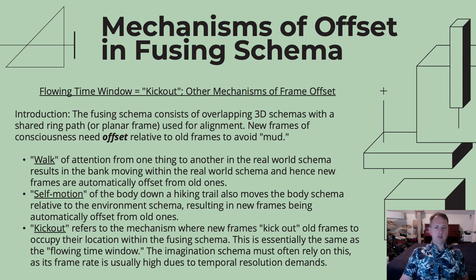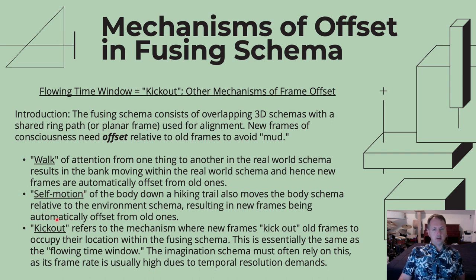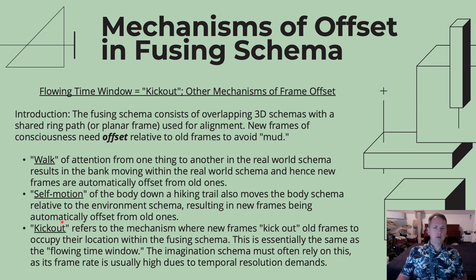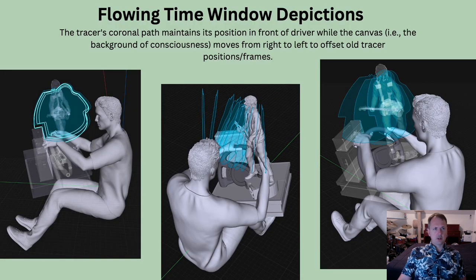If we consider alignment frames or slices of consciousness as planar slices, they need a way to offset the new from the old. There are three mechanisms: you can move your attention from one item to another within the real-world schema; you can move your body down a trail like when hiking; or you can be stationary and kick out old alignment rings as new ones are printed. These three mechanisms create the offset.